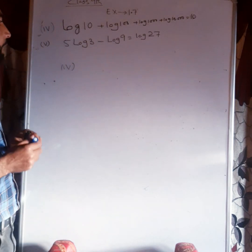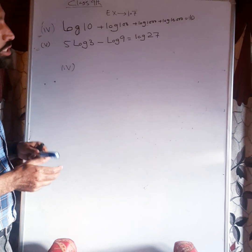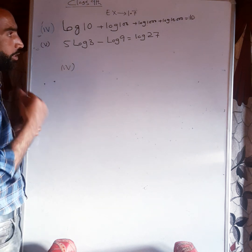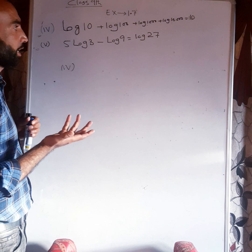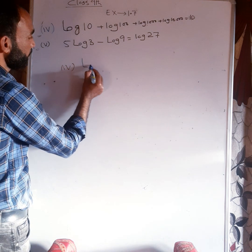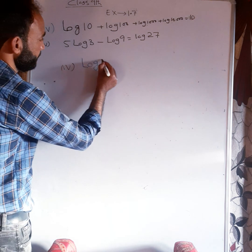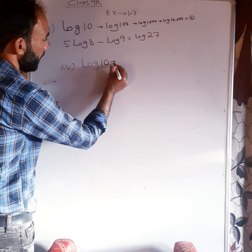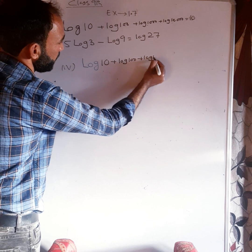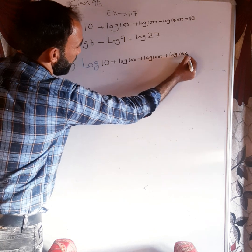We have to prove that log ten plus log hundred plus log thousand plus log ten thousand is equal to ten. It is given in the question that we have to take the base as ten — log ten plus log hundred plus log thousand plus log ten thousand.